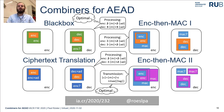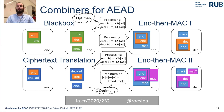We also see that the ciphertext size for our second encrypt-and-MAC combiner is optimal, meaning we provide practical combiners for use in the real world. All the details of our work can be found in the full paper, which is available on ePrint, and you can always contact me via email or Twitter. Thank you very much for your attention.